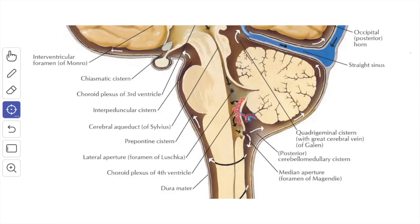In this video, we will study about the fourth ventricle of the brain. The fourth ventricle is a tent-like cavity of the hindbrain lined with ependyma and filled with cerebrospinal fluid. It is situated in the posterior cranial fossa, in front of the cerebellum, behind the pons and upper part of the medulla oblongata. It is continuous inferiorly with the central canal of the lower part of the medulla oblongata, and superiorly it is continuous with the cerebral aqueduct of the midbrain.